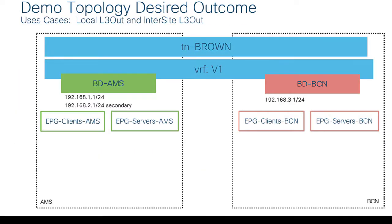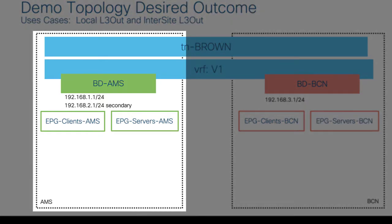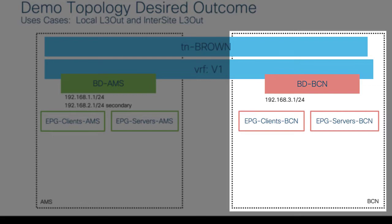Let's go over what I've got in my demo topology and my desired outcome. You should be familiar with tenant Brown — it has a VRF stretched across both sites. In site Amsterdam we've got a unique local bridge domain BDAMS and a couple of EPGs that live only in the Amsterdam site. In Barcelona, site number two, we've got the same sort of thing — a local bridge domain and a couple of EPGs that live only in site Barcelona.